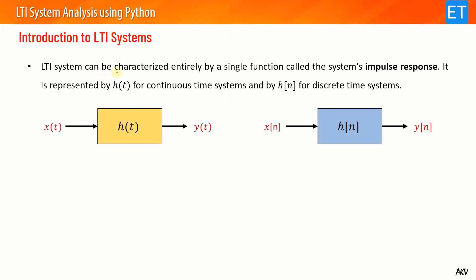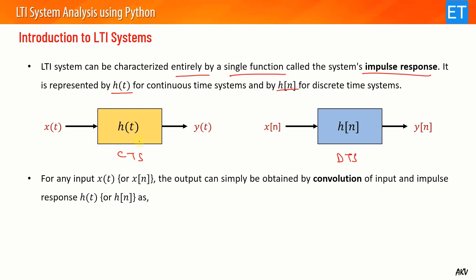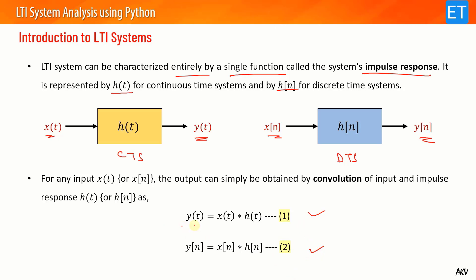An LTI system can be characterized entirely by a single function known as the impulse response of the system. It is represented by h(t) for continuous-time systems and by h(n) for discrete-time systems. For these systems I can find output y(t) or y(n) for any input x(t) or x(n) just by the convolution of the input with the corresponding impulse response. These two convolution equations are in the time domain and I can represent them in the corresponding frequency domain.